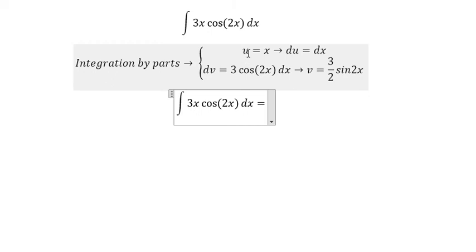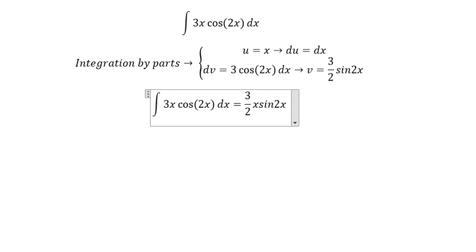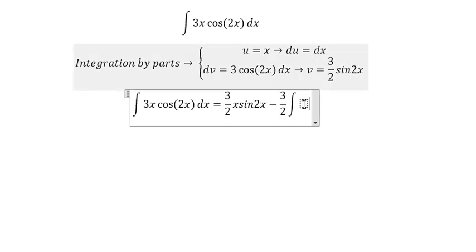So we have u multiplied with v, later that we have negative 3 over 2 the integral sin 2x dx.